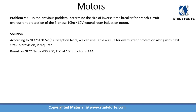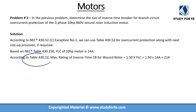In problem number 1, we already calculated the FLC of the 10 horsepower motor as 14 amps using table 430.250. Coming back to table 430.52, the maximum rating of an inverse time circuit breaker for a wound rotor application is 150% of FLC — that is 1.50 times 14 amps — which gives us 21 amps.